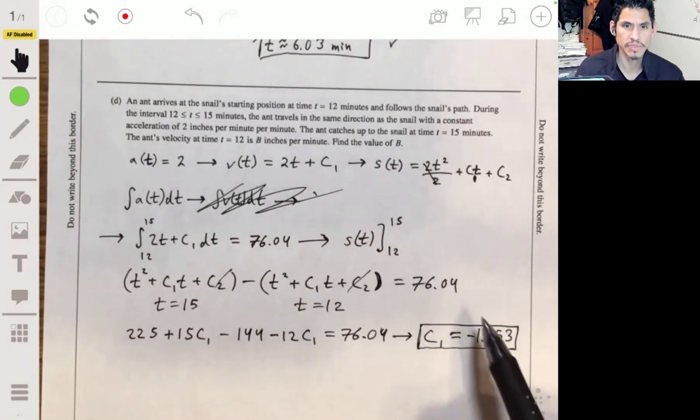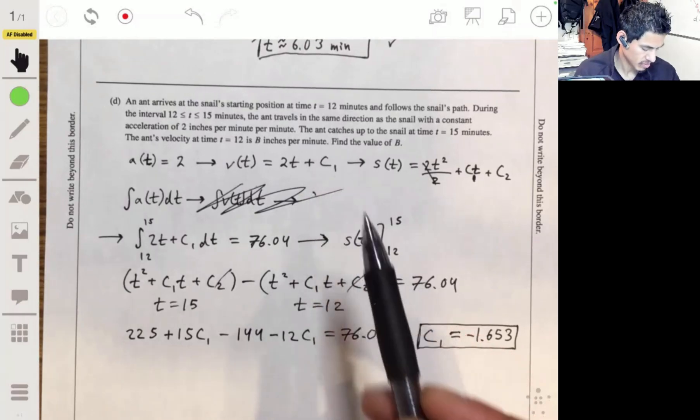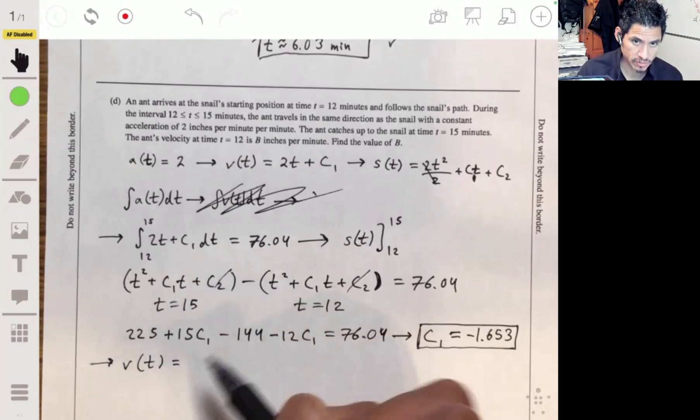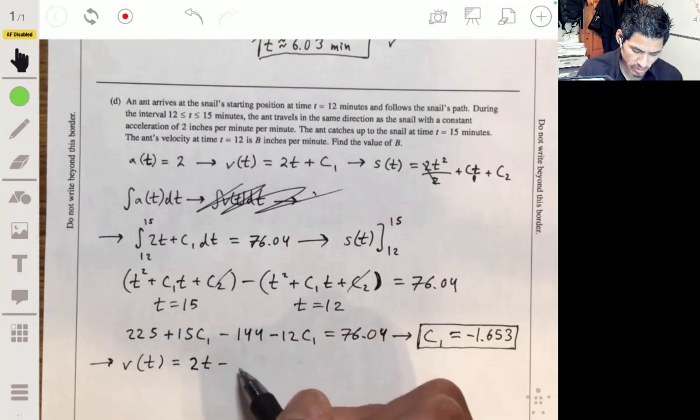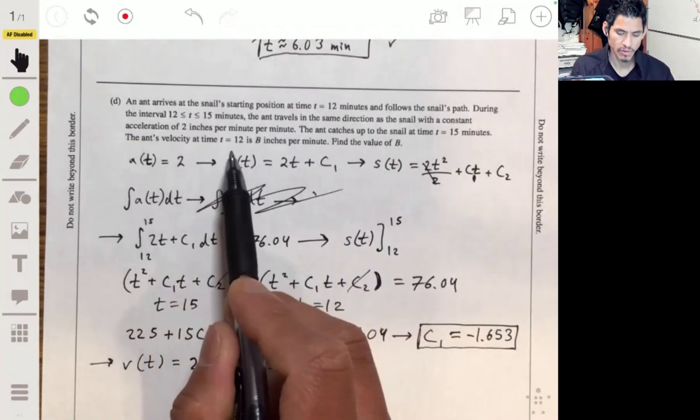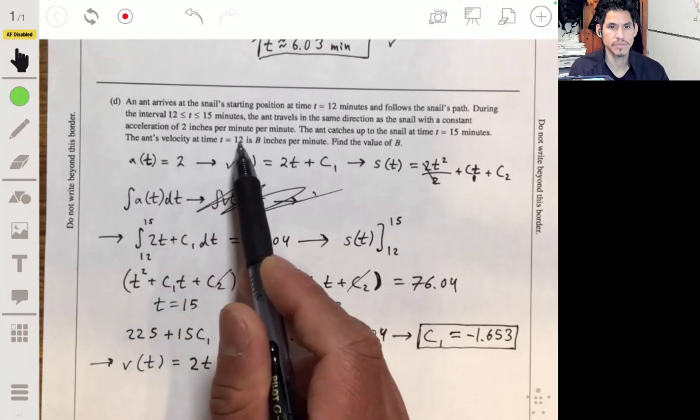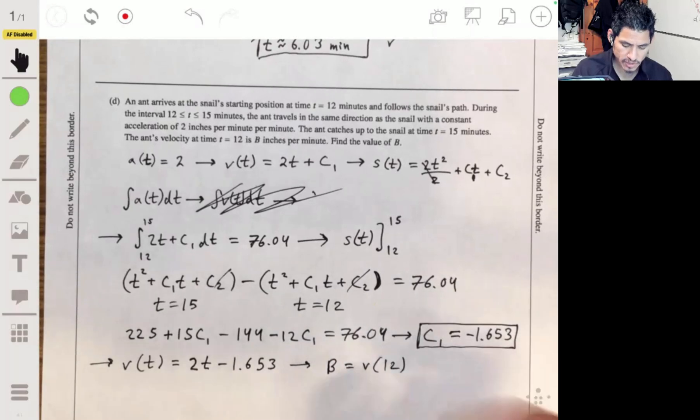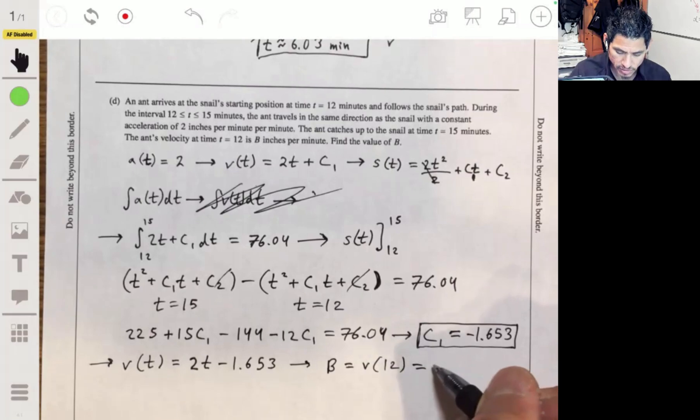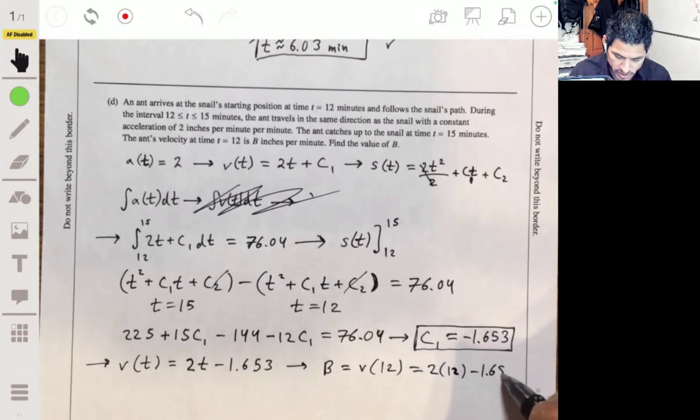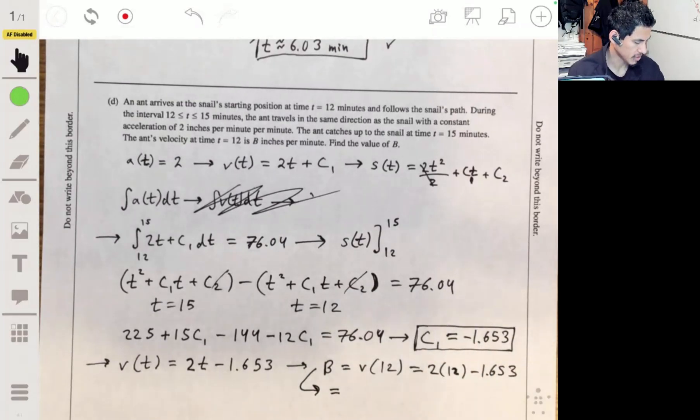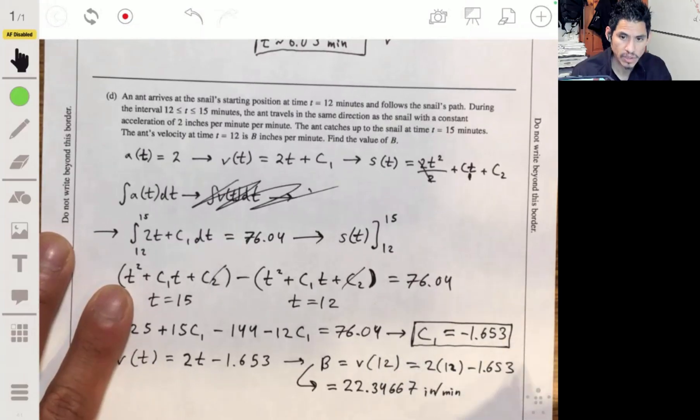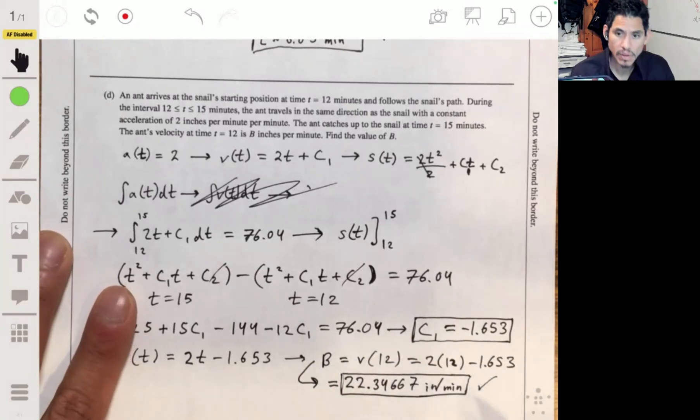Now plugging this into our velocity function right there, we'll get that our velocity function is equal to 2t - 1.653. Now, it says the ant's velocity at time t = 12 is b inches per minute. So then b will just be equal to v(12) when you plug in 12 into this equation. And that would just be 2 times 12 minus 1.653, which will give us about 22.34 inches per minute.